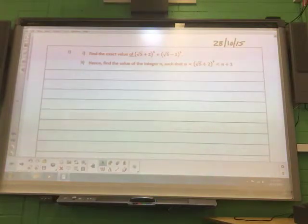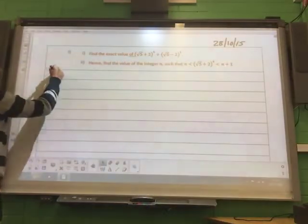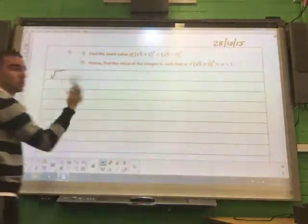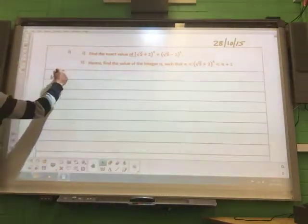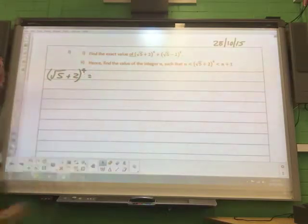Alright, so we've got binomial, so we've got two terms in there. So we've got an expansion, so we're going to use our binomial expansion there. So we're going to do the sum of these. What I'm going to do is write them separately. So root 5 plus 2 to the power of 4.